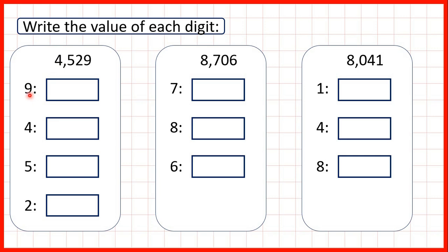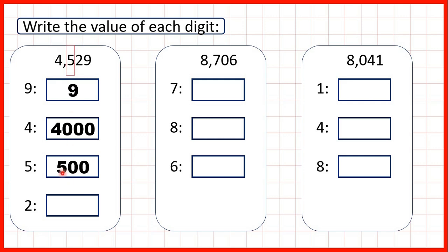So the 9 is in the ones place value, so that just stands for 9. The 4 is in the thousands, so that's 4000. The 5 is in the hundreds, so it represents 500. And then we have 2 in our tens, so that's 20.